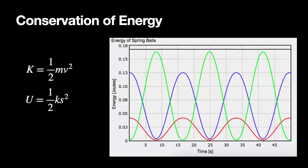What about energy? If I define the kinetic energy of each ball as one-half mv-squared and the spring potential energy as one-half k*s-squared, where s is the stretch of the spring, then I can plot the kinetic energy of each ball and the spring potential energy. Adding all three together gives a black line at about 0.18 — the total energy is constant. So both momentum and energy are conserved.